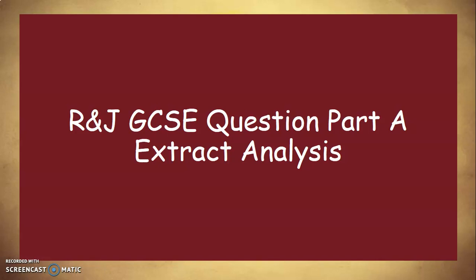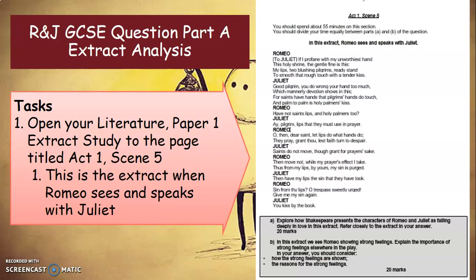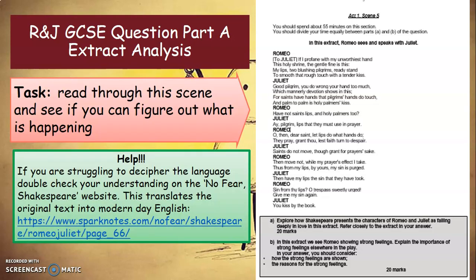Moving on to your Romeo and Juliet GCSE question Part A — we're going to look at extract analysis. First, open your Literature Paper 1 extract study to the page entitled Act One, Scene Five. This is the extract when Romeo sees and speaks with Juliet for the first time. Read through the scene and figure out what is happening — it's really important you understand the language before we analyze it. If you're stuck, use the No Fear Shakespeare link at the top, which translates the original text into modern English. Pause the video to complete that task.